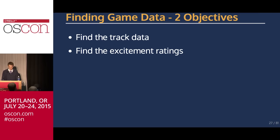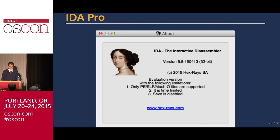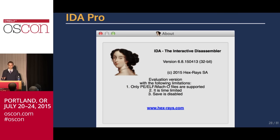I had two basic objectives: find all the track data, and find all the game ratings — how the game does ratings. There was a lot of hunting around. The basic tool for doing this is called IDA. It lets you view x86 in a slightly nicer format, annotate it, and do all kinds of useful things. There is a free version — the pro version is expensive, but security engineers use it a lot for reverse engineering binaries. Same sort of thing for game disassembly.